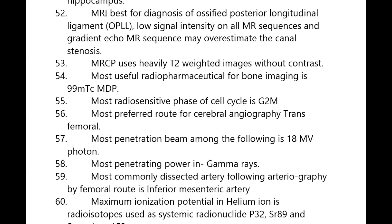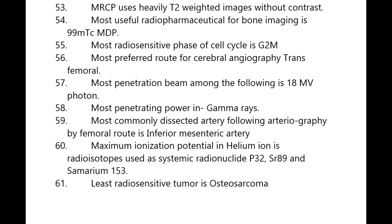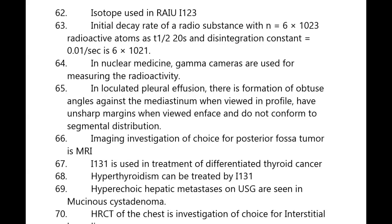Maximum ionization potential is in helium ions. Radioisotopes used in systemic radionuclide therapy are P-32, Sr-89, and samarium-153 (Sr = strontium, P = phosphorus). The least radiosensitive tumor is osteosarcoma. The isotope used in radioiodine therapy is iodine-123.